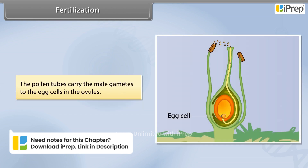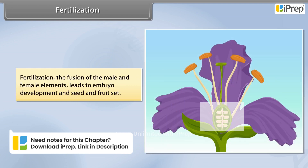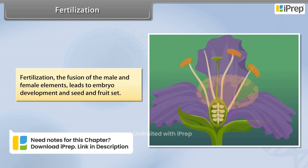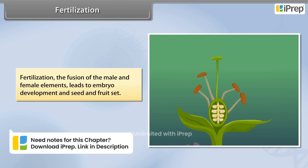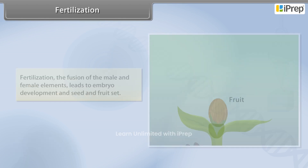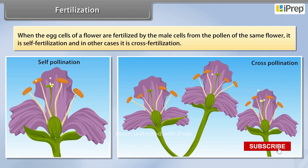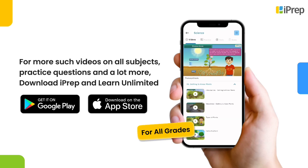Pollen tubes carry the male gametes to the egg cells in the ovules. Fertilization — the fusion of the male and female elements — leads to embryo development and seed and fruit set. When the egg cells of a flower are fertilized by male cells from pollen of the same flower, it is self-fertilization; in other cases, it is cross-fertilization.